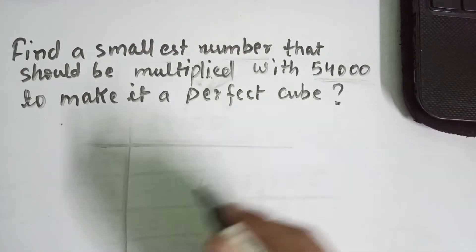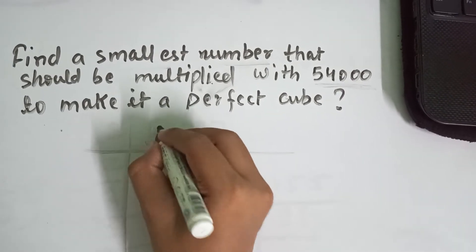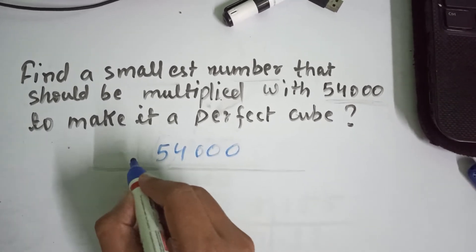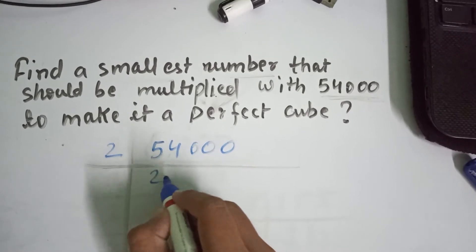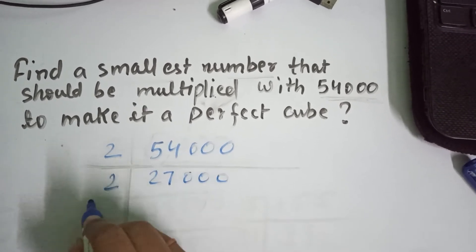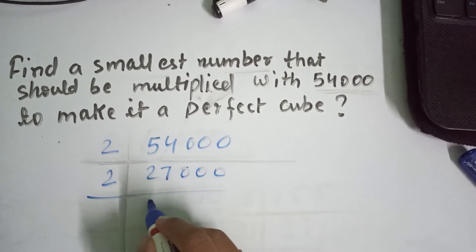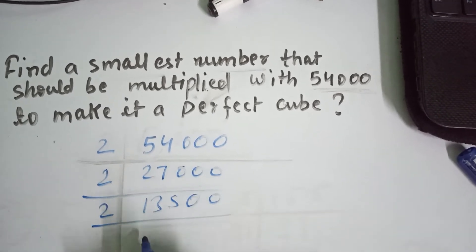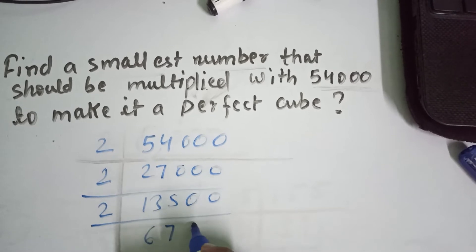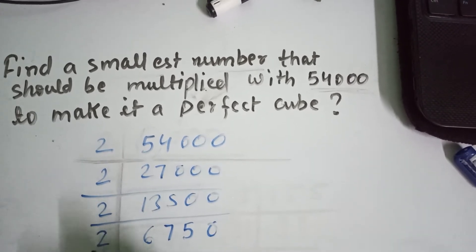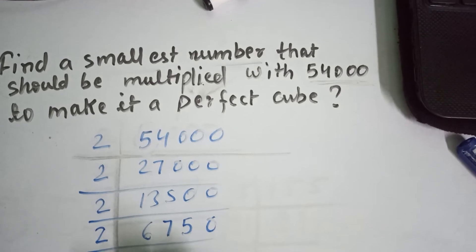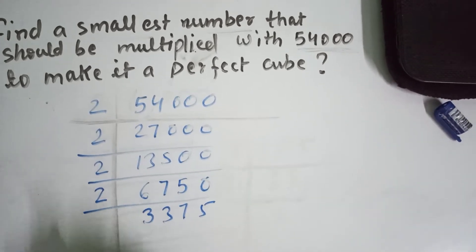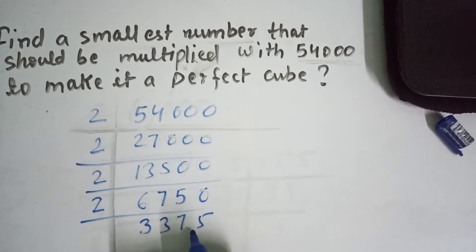Let's draw a line and work with 54,000. First of all we need to divide by 2, so we will get 27,000. Again we divide by 2 and we get 13,500. Again we divide by 2 and we get 6,750. Now we cannot divide by 2 here.